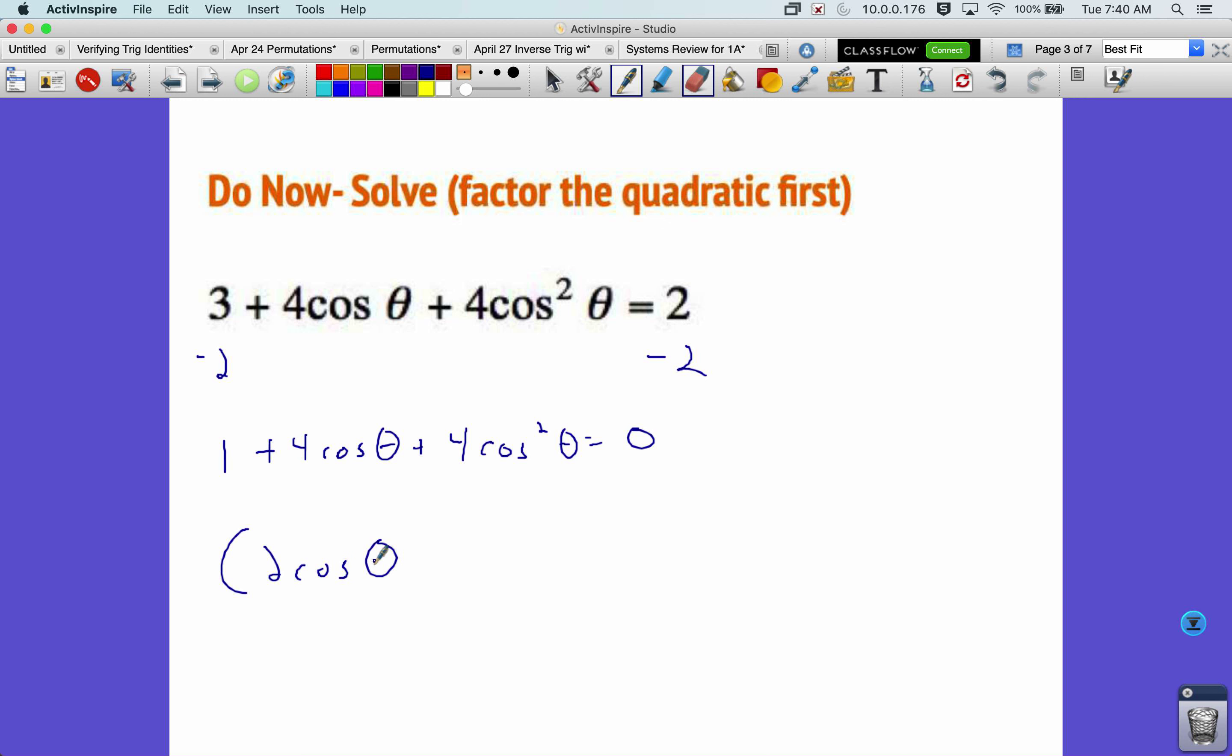And I'm going to see if I can factor it by using two cosine theta in the first spot of two factors. I think if I just put a plus one after each of these, then I'll get my four cosine squared back. I'll get a two cosine and then another two cosine, then I'll have to be a four cosine, then I'll get a plus one.